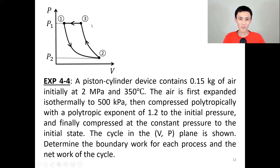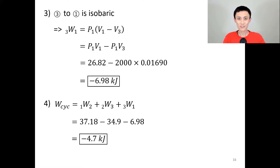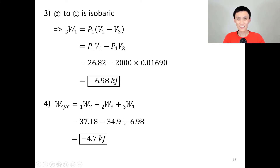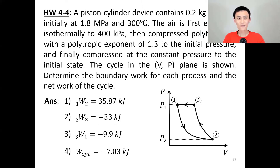For process 3→1, isobaric, we use formula one. We know the pressure and all volumes, so we plug them in — still a negative work since volume decreases. The overall work is the sum of work from all three processes, giving a negative number, consistent with the counterclockwise direction. There is also a homework problem similar to this example that you can practice; check your answer when done.